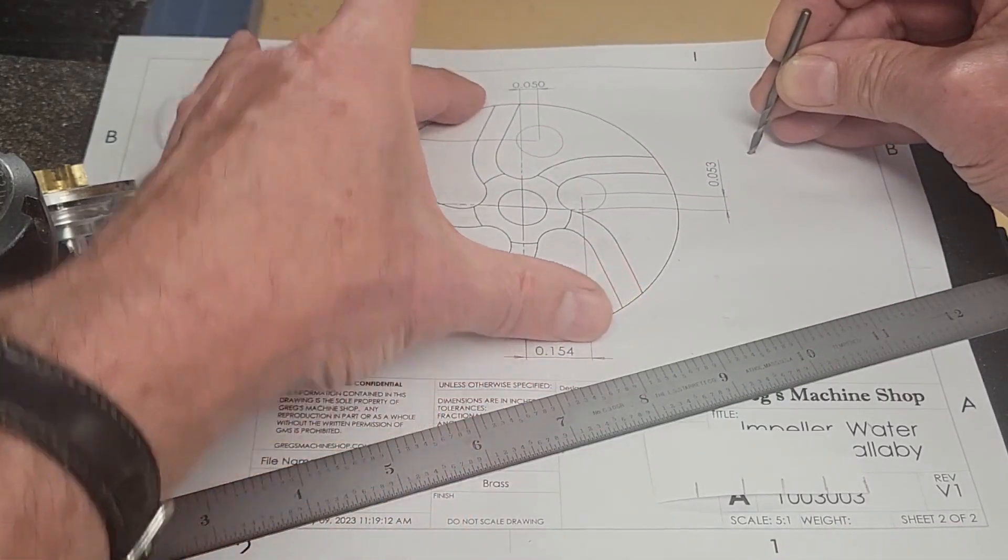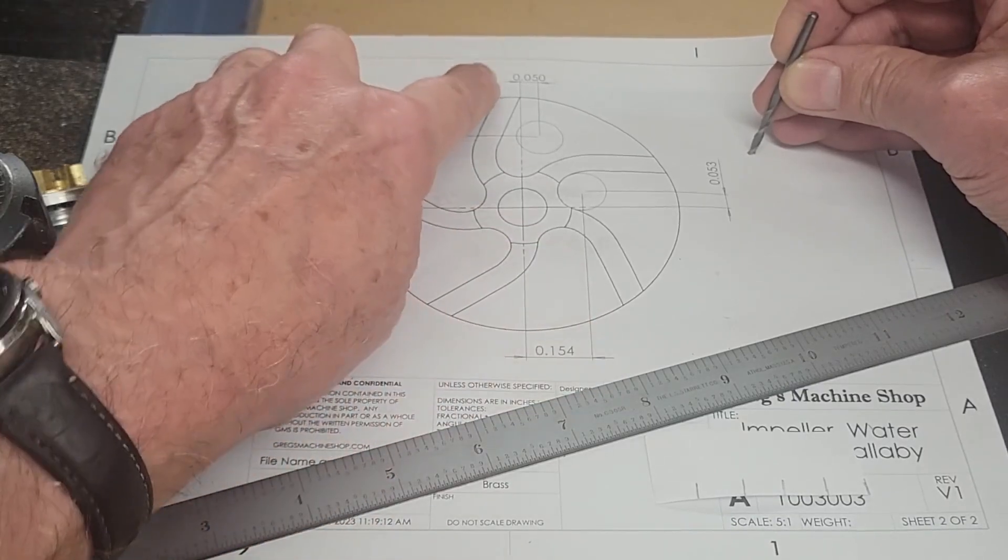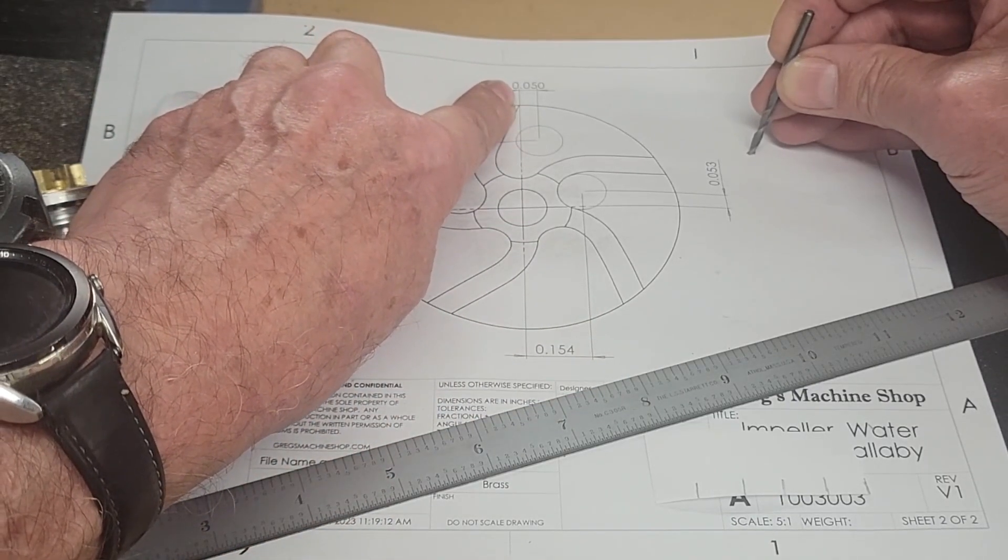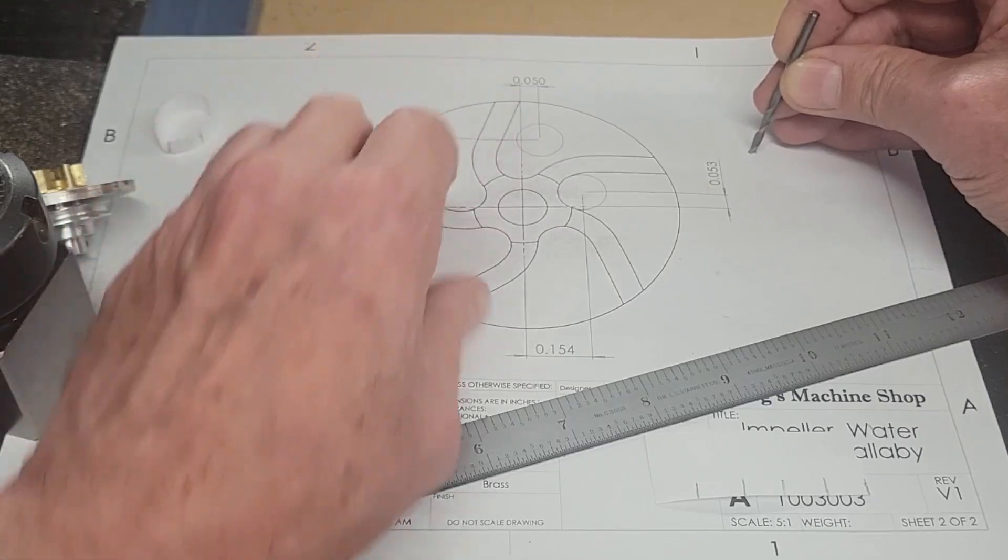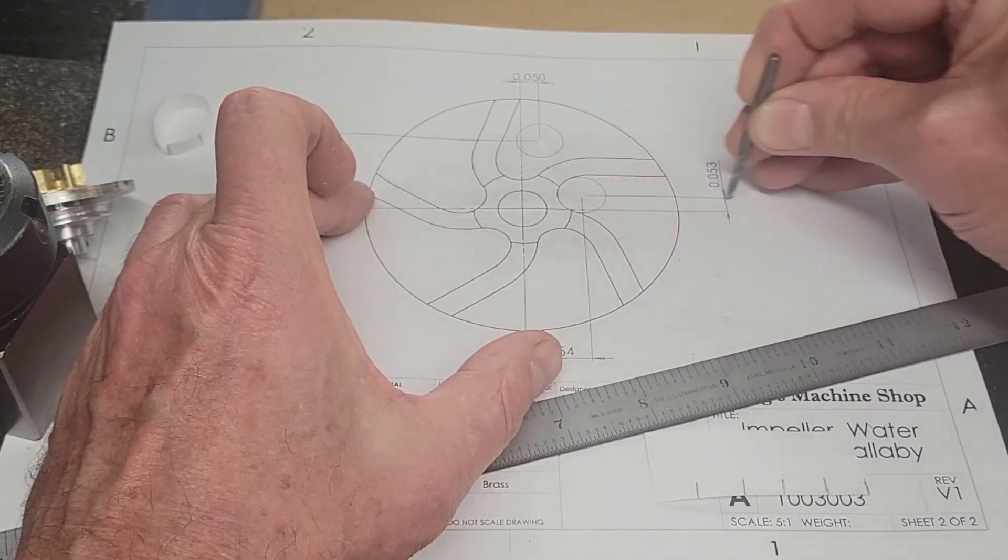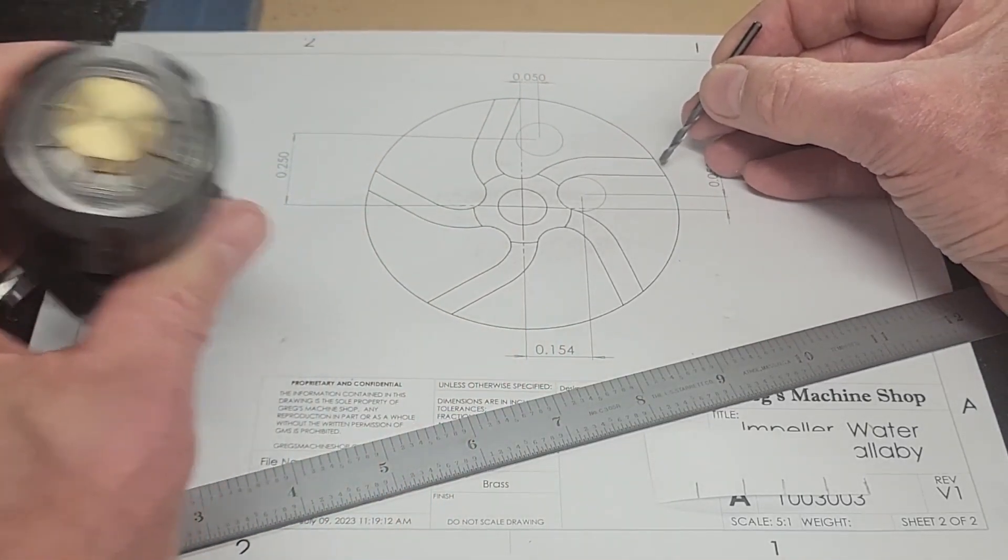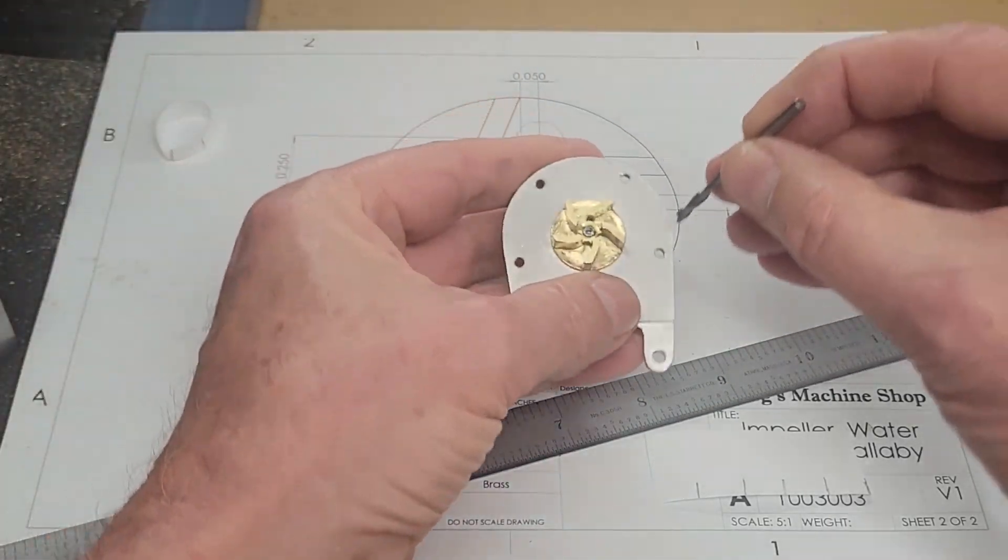Then we're going to take this and we're going to rotate it 72 degrees to the next fin on our impeller and repeat the operation. Bring this into here, bring it out, bring it up, bring it over. That will cut these fins here.